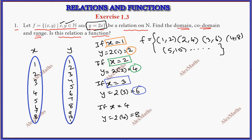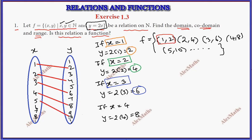Now we have an arrow diagram. 1 is connected to 2, 2 is connected to 4, 3 is connected to 6, 4 is connected to 8, and 5 is connected to 10.